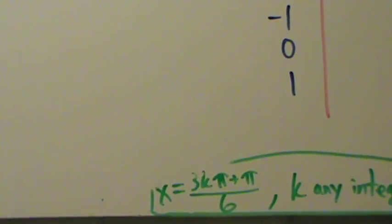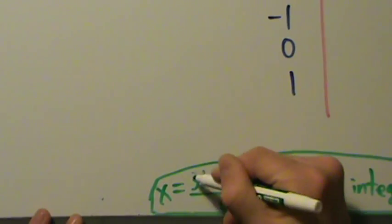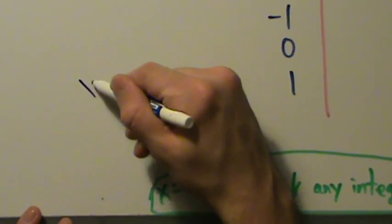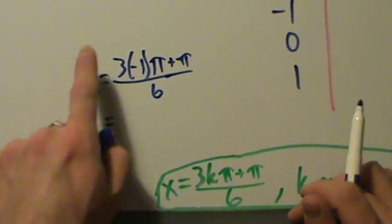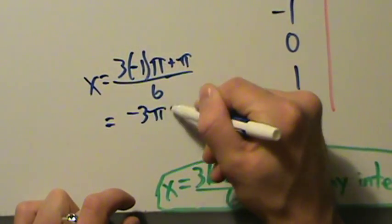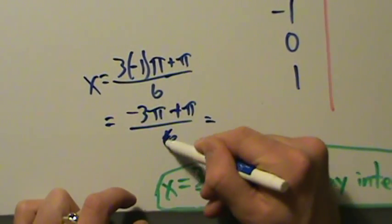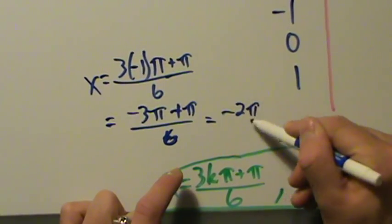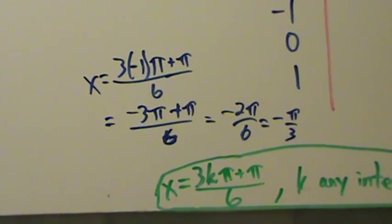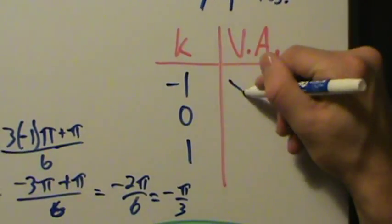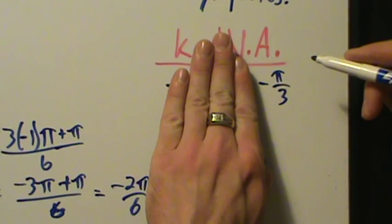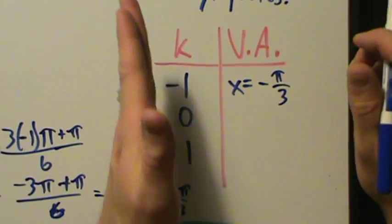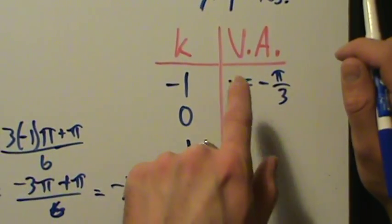When k is negative 1: x equals 3 times negative 1 times pi plus pi, all over 6. That's negative 3 pi plus pi over 6, which is negative 2 pi over 6, simplifying to negative pi over 3. So the first vertical asymptote is x equals negative pi over 3. Make sure you write x equals — it's not enough to just say negative pi over 3, because a vertical asymptote is an equation of a vertical line.